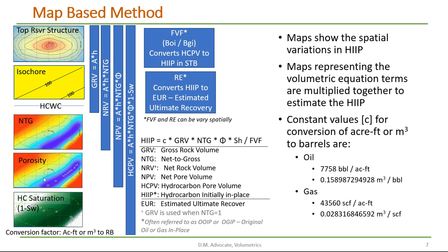Then we multiply it by the porosity. Here we get up to 30% porosity in the blue area, which is a channel feature running through here, and then we get the net pore volume. We then work on the hydrocarbon saturation map of the area, which gets up to about 80% hydrocarbon saturation, and there we'll get the hydrocarbon pore volume. Finally, we need some kind of formation volume factor — either the oil shrinkage or the gas expansion factors — and this will convert the hydrocarbon pore volume into stock tank barrels or standard cubic feet of gas.